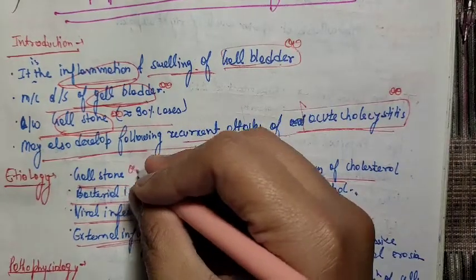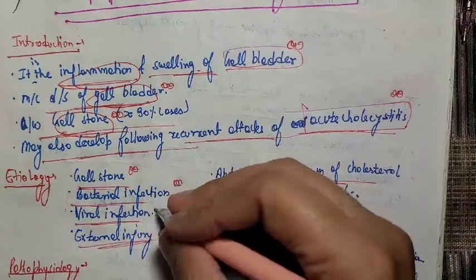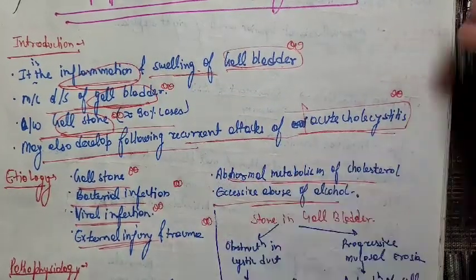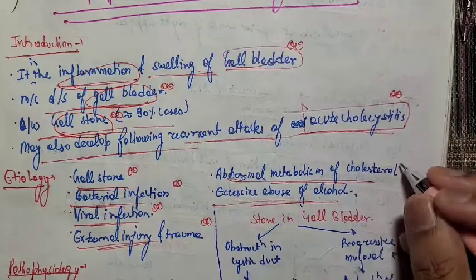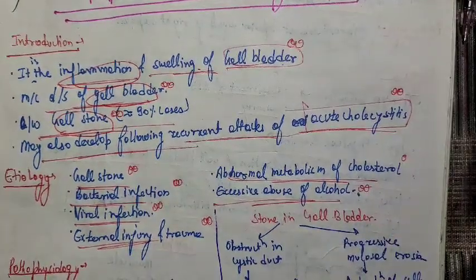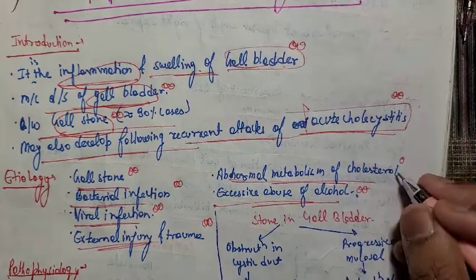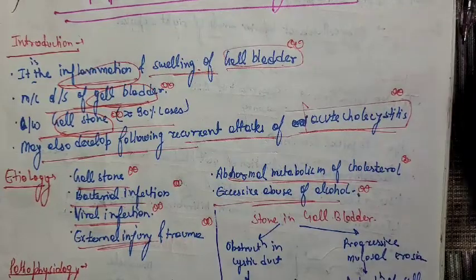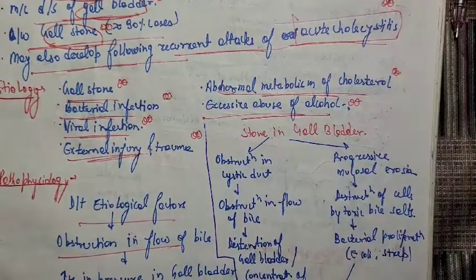The etiology of chronic cholecystitis includes: gallstones, bacterial infection, viral infection, external injury or trauma, abnormal metabolism of cholesterol, and excessive abuse of alcohol. If you drink a lot of alcohol, it can precipitate the condition. Similarly, if cholesterol metabolism is abnormal, chronic cholecystitis can be precipitated.